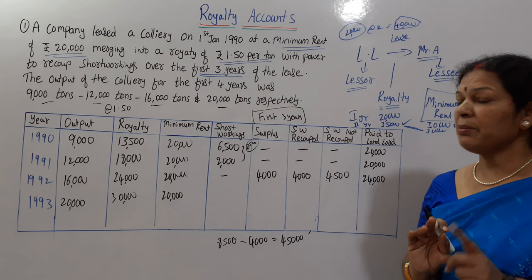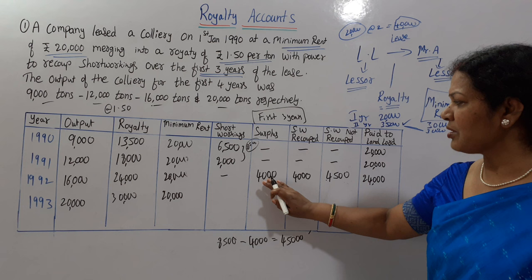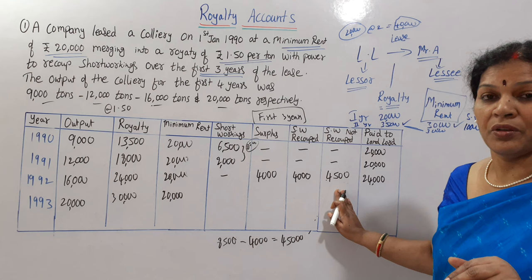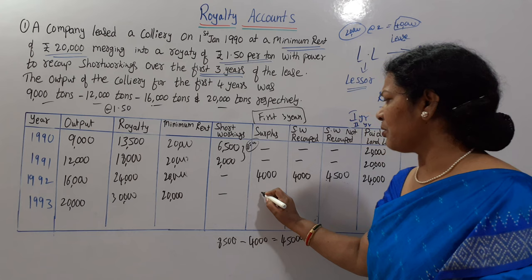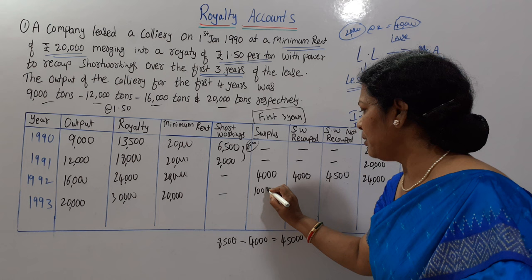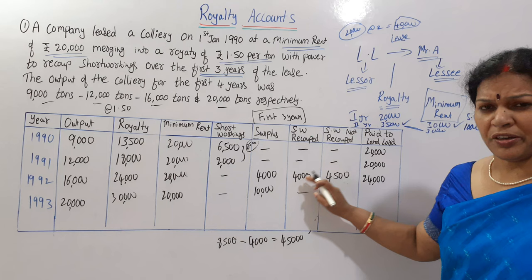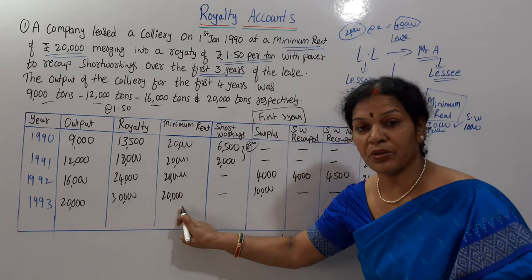Fourth year (1993): minimum rent is 20,000, royalty is 30,000. The recoupment period of first three years is over, so we no longer show short workings columns as active. Royalty is more than minimum rent, so we pay 30,000 to the landlord. The 4,500 short workings that were not recouped within the first three years are treated as lapsed — we need not touch them again. Pay to landlord: 30,000.